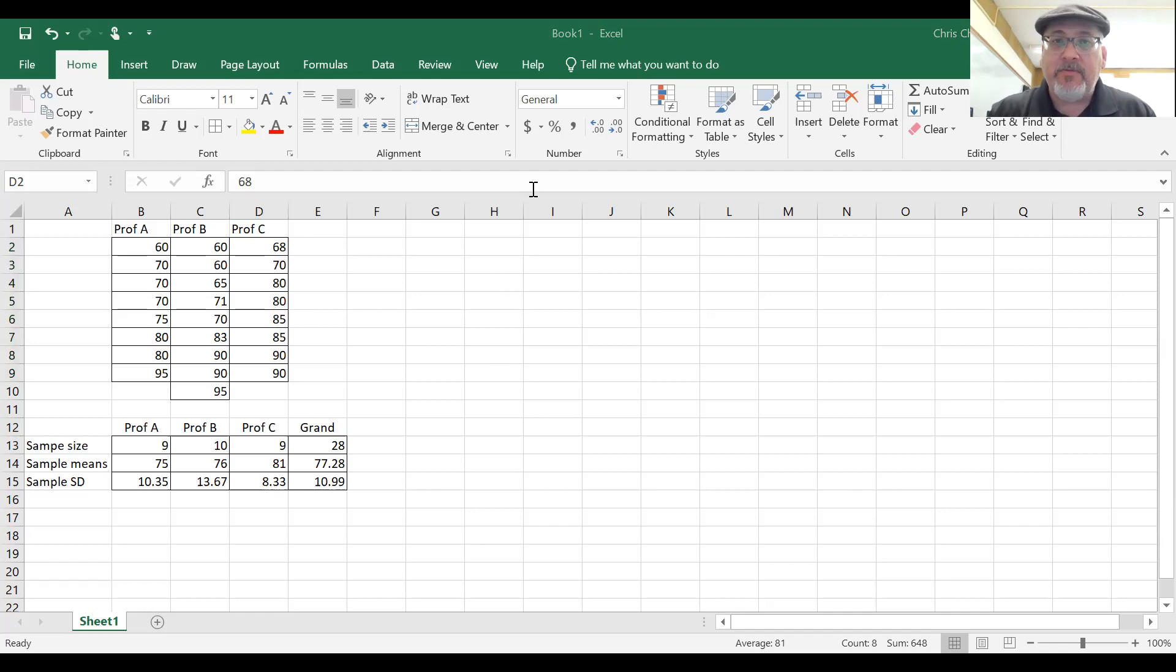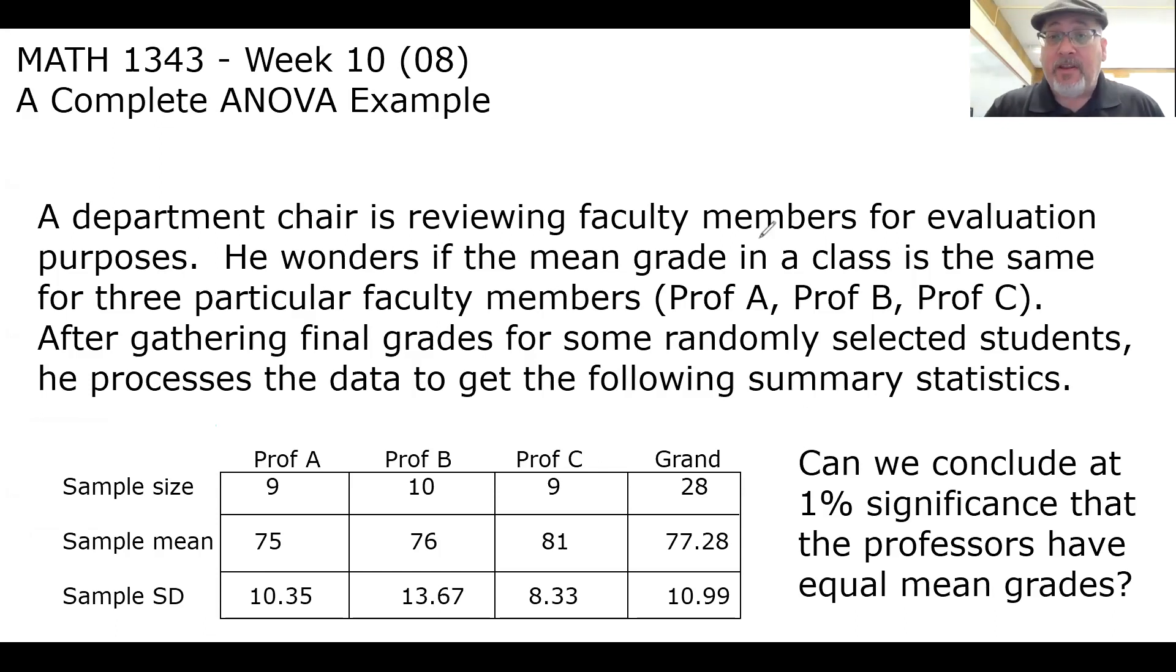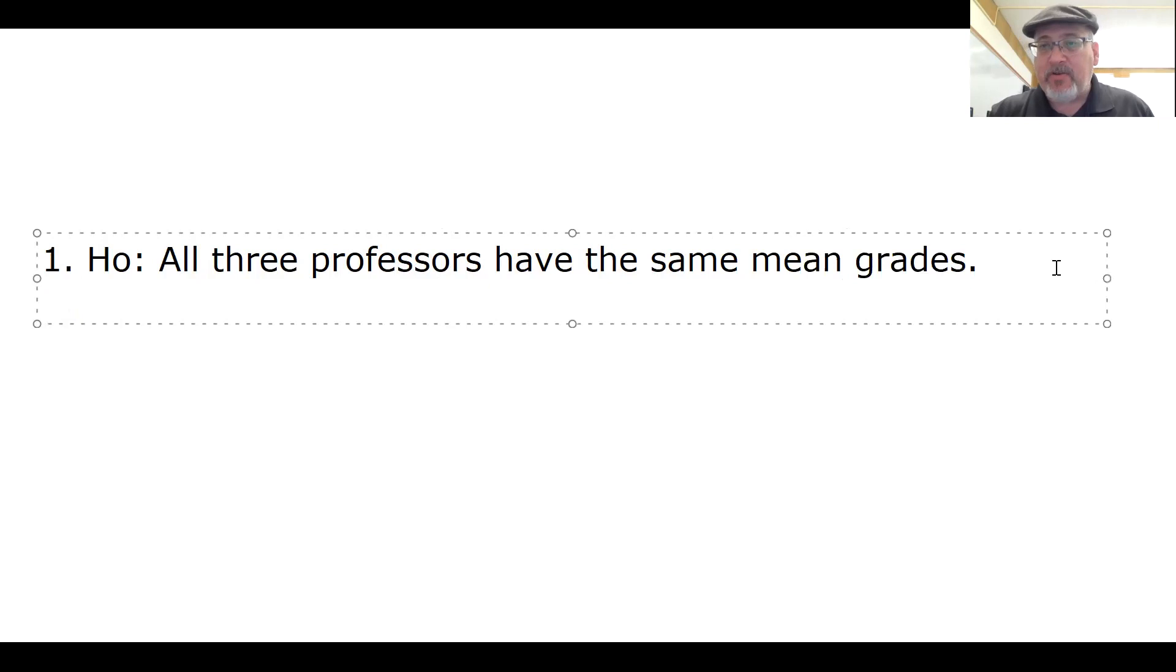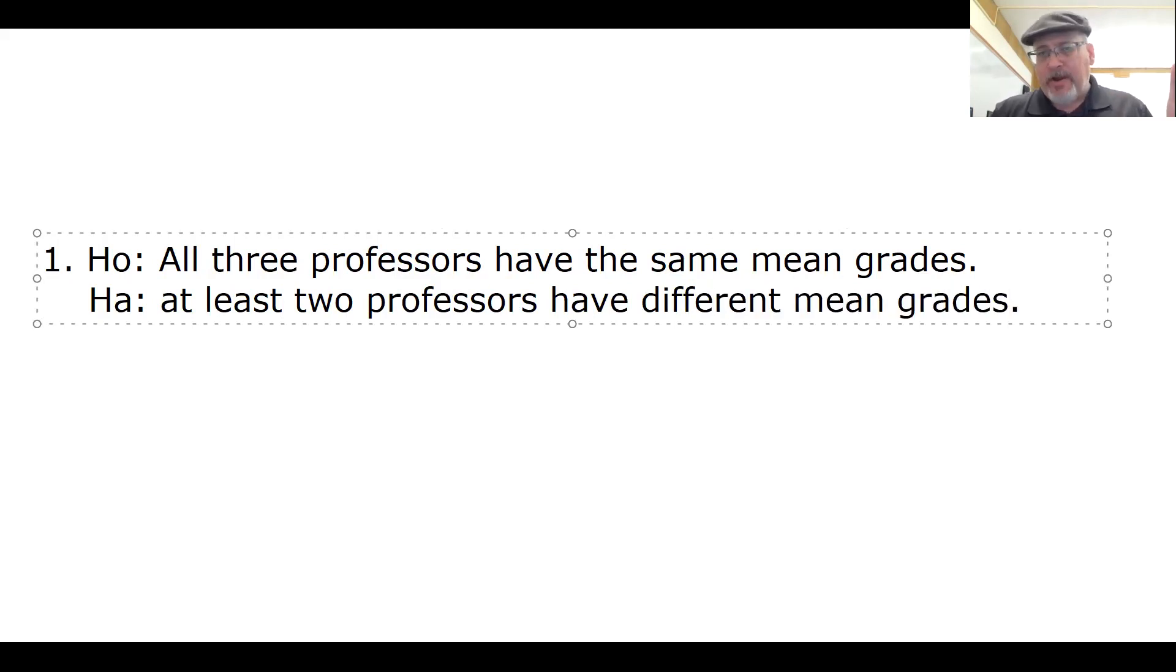We're ready to hit the ground running. Let's go through the motions. Step number one, state the hypotheses. Pretty straightforward. The null hypothesis is always because of the flavor: all the means are equal. In this case, we could say all three professors have the same mean grades, meaning that their students have the same mean grades. The alternative would be at least two professors have different mean grades.